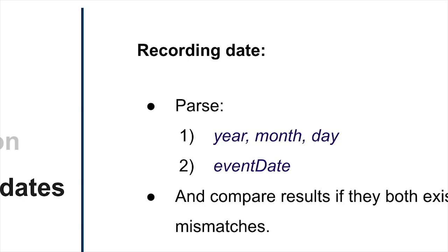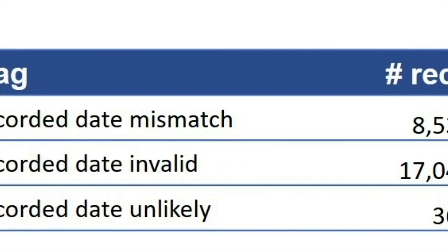Finally, there's interpretation of event information — specifically dates — because there are many different fields in Darwin Core where dates can appear. GBIF parses the year, month, and day fields as well as the event date, and compares the two sets to detect mismatches and flag them. The event flags cover date mismatches in their various forms, invalid dates, and unlikely dates such as those before Linnaeus or anything BC.